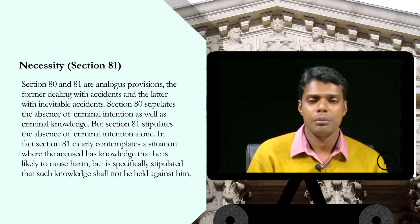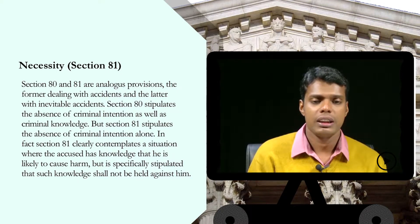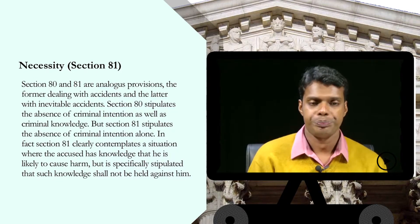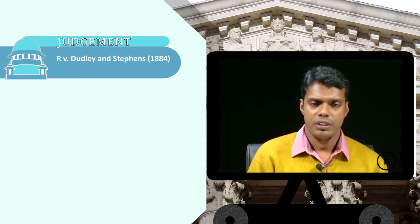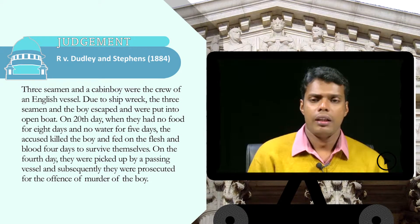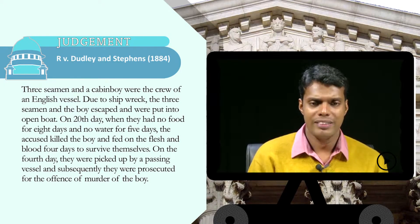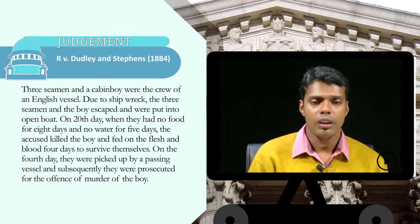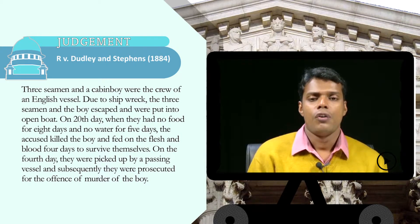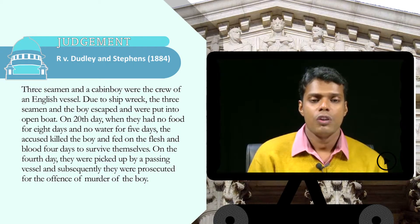Section 81 clearly contemplates a situation where the accused has knowledge that he is likely to cause harm, but it is specifically stipulated that such knowledge shall not be held against him. In the case of R versus Dudley and Stephens, three seamen and a cabin boy were the crew of an English vessel. Due to shipwreck, they escaped into an open boat. On the 20th day, having had no food for eight days and no water for five days, the accused killed the boy and fed on his flesh and blood for four days to survive. On the fourth day, they were picked up by a passing vessel and subsequently prosecuted for the murder of the boy.